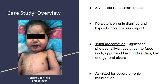We're going to start off with a case study overview. To the left you'll see our patient upon initial presentation. It is a three-year-old Palestinian female with persistent chronic diarrhea and hypoalbuminemia since age one. Her initial presentation was significant photosensitivity, scaly rash to face and neck — also known as pellagra — upper and lower extremities, low energy, and oral ulcers. She was first admitted for severe chronic malnutrition.